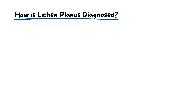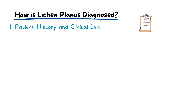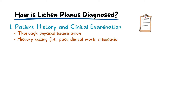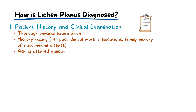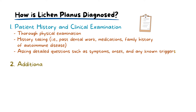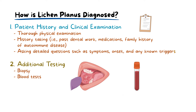Diagnosing oral lichen planus involves a multi-faceted approach, generally starting with patient history and then clinical examination. The unique appearance of the lesions often provides strong clues for the diagnosis. Additional tests may be necessary for confirmation in some cases, including a biopsy of the lesion or blood tests to rule out other conditions. A biopsy is particularly useful in diagnosing erosive or more severe types, as it provides a microscopic view of the affected cells.